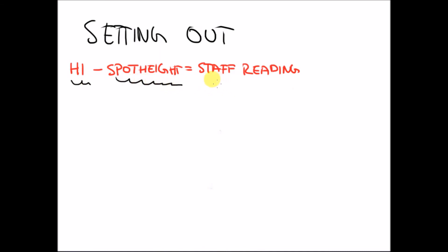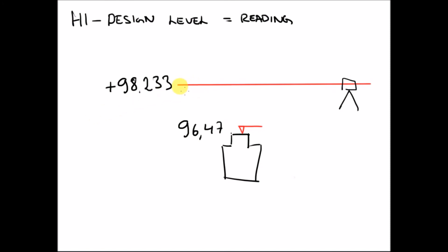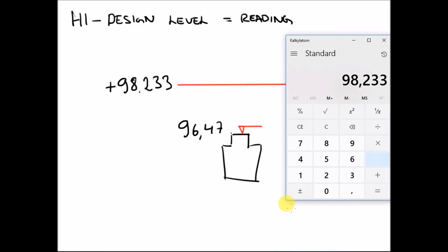Here's a worked example. You have a height of instrument of plus 98.223 and a cover level to set out at plus 96.047. What is your staff going to be? Well, you subtract 98.223 minus 96.047. This equals 1.763. So you'd set that on your staff.